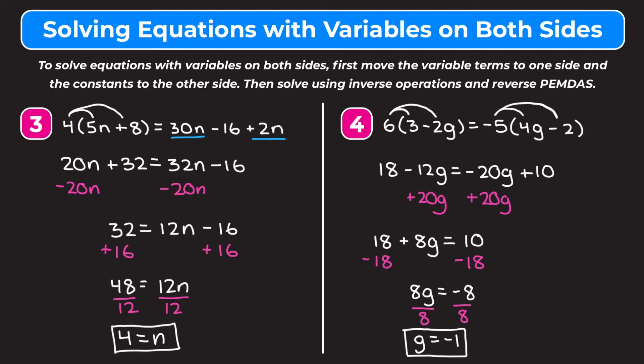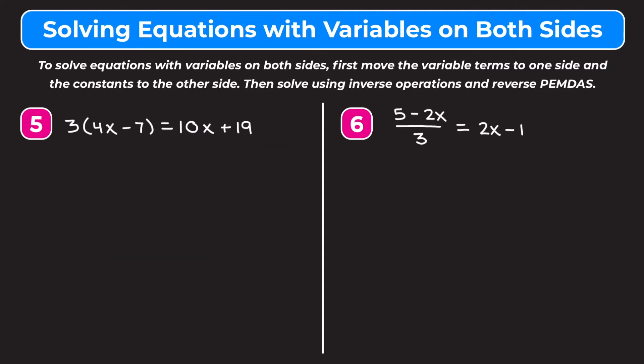Let's take a look at two more examples. I encourage you to pause the video and try them on your own, then come back and watch my explanation to check your answer. Example 5 is 3 times the quantity of 4x minus 7 equals 10x plus 19. We need to get the variable terms together, so first we distribute this 3: 3 times 4x gives us 12x, and 3 times minus 7 is minus 21.